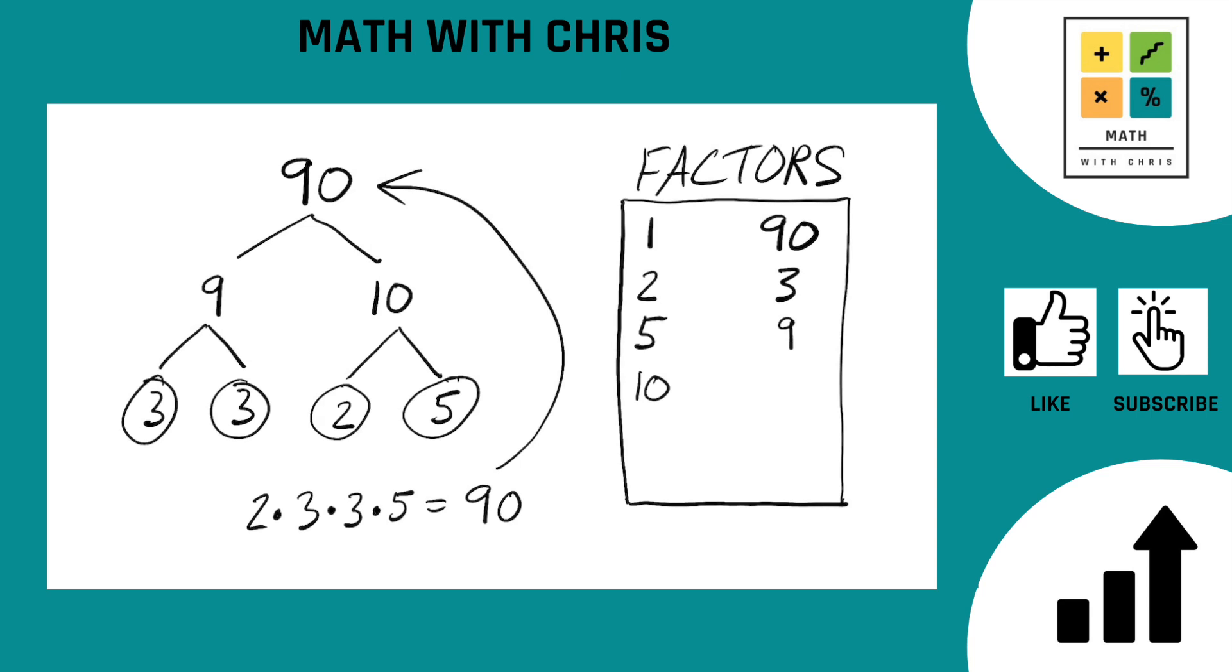Last step of the game is we come down to look at our factors, the prime factors. And is there any other combination of these numbers we can multiply together to give us some number not in the bank? Let's go ahead and look. 2 times 3, let's start with that. 2 times 3 is 6. We don't have 6 yet. So let's go ahead and bank 6.